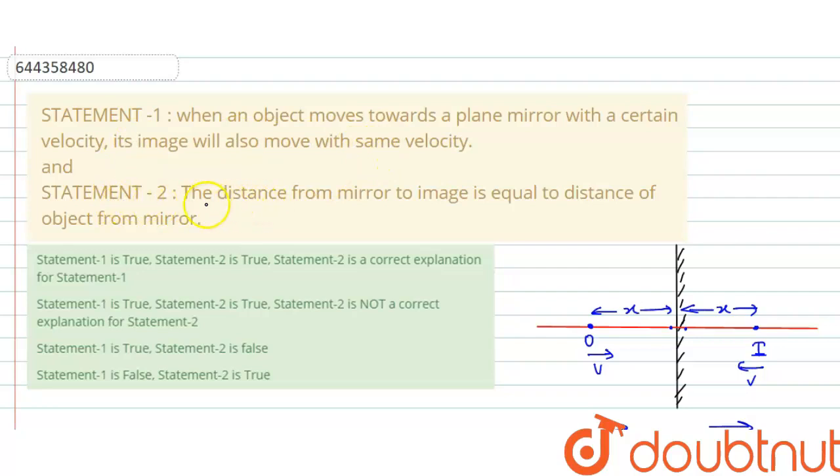Statement two: the distance from the mirror to image is equal to distance of object from mirror. Yeah, this is a true statement. So statement one is false and statement two is true. I hope you understood the explanation.